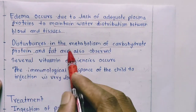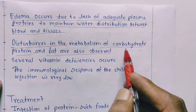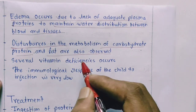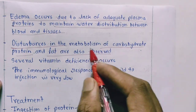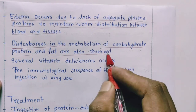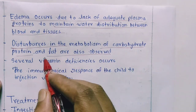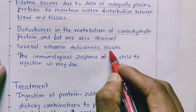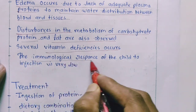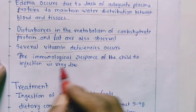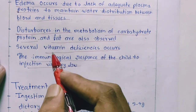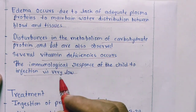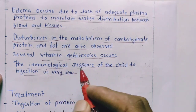Disturbances in the metabolism of carbohydrates, proteins, and fats are also observed. Several vitamin deficiencies occur, and the immunological response of the child to infection is very low. These are the biochemical manifestations of Kwashiorkor.